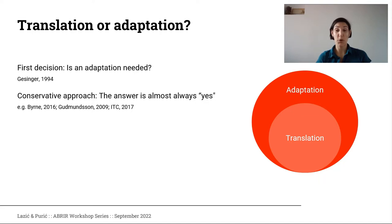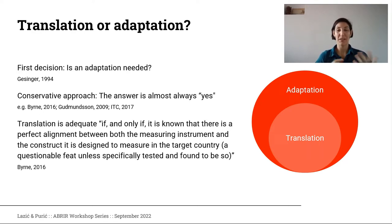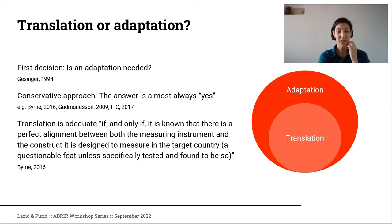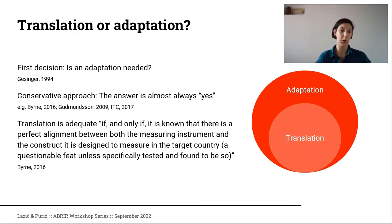The conservative approach is that pretty much in any situation, the answer is we need to do an adaptation. Bern states that a translation is adequate if and only if we are absolutely sure that there is a perfect alignment between both the measuring instrument and the construct it's designed to measure in the target country and the country where it was developed. The only way to know for sure that we have this type of equivalence is to test for it, which pretty much entails the whole process of the adaptation.